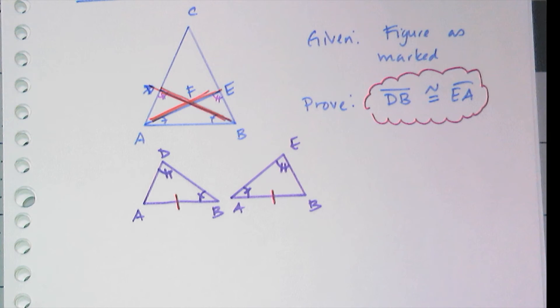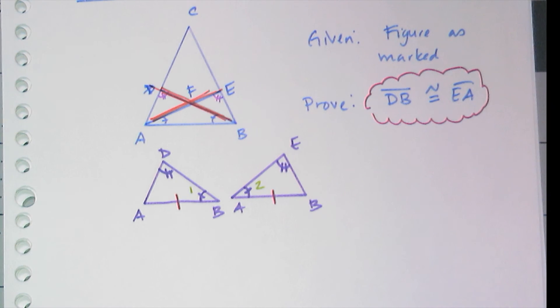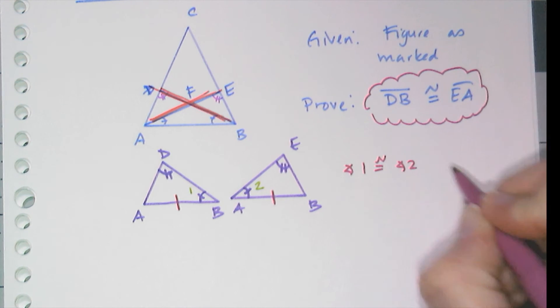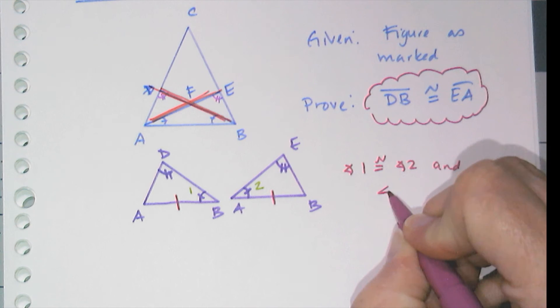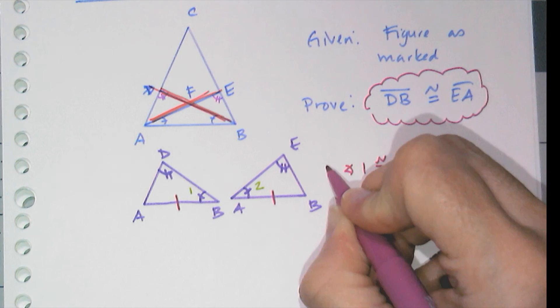So now if I actually want to write my proof up, I'm going to number these angles just to make it a little easier for me. Okay, so I can say angle 1 is congruent to angle 2, and angle D is congruent to angle E because those were given. Okay, that's like the first line of my proof.